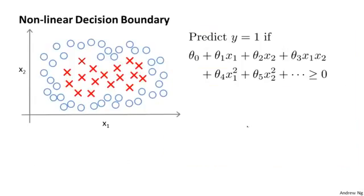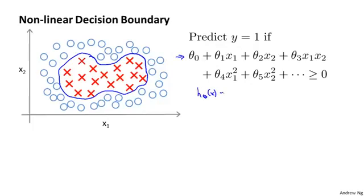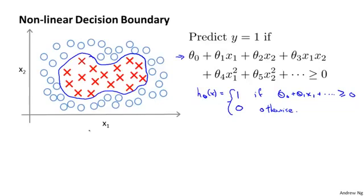If you have a training set that looks like this and you want to find a nonlinear decision boundary to distinguish the positive and negative examples — maybe a decision boundary that looks like that — one way to do so is to come up with a set of complex polynomial features, so a set of features that looks like this, so that you end up with a hypothesis that predicts one if theta zero plus theta one x one plus dot dot dot, all those polynomial features, is greater than zero, and predict zero otherwise.